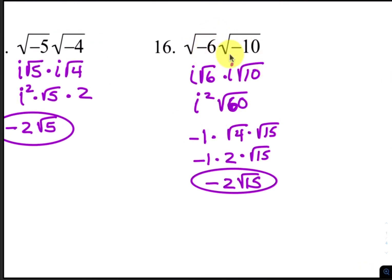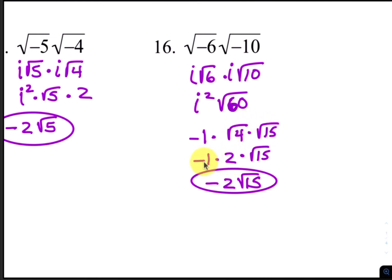For number 16, take the i's out. That becomes i square root of 6 times i square root of 10. i times i is i squared, and 6 times 10 is 60. i squared becomes negative 1. The square root of 60 can be written as the square root of 4 times the square root of 15. The square root of 4 becomes 2, so negative 1 times 2 is negative 2, with square root of 15 left over.